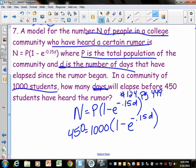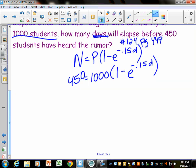This looks kind of ugly, but it's kind of just like the last problem. If there's an e, at some point, we're going to want to ln. But let's get e by itself. The first thing I'm going to do is I'm going to divide by 1,000. And you can simplify that. 45 over 100. What, 5 goes into both of those? 5. Yeah. So, that's 9 over 20 equals 1 minus e to the negative 0.15d.